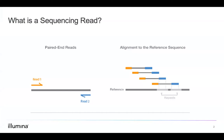First, let's discuss why you would choose NGS over other methods such as PCR or Sanger sequencing. The introduction of next-generation sequencing in the early 2000s revolutionized the genomics industry by allowing users to greatly increase the scale and scope of their experiments. Next-generation sequencing has enabled detection of variants that would be more expensive or more challenging to identify via PCR or Sanger sequencing.